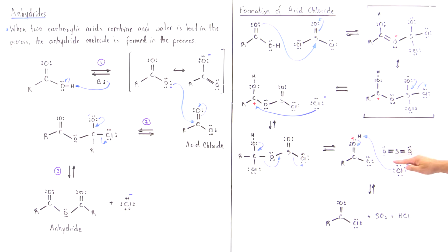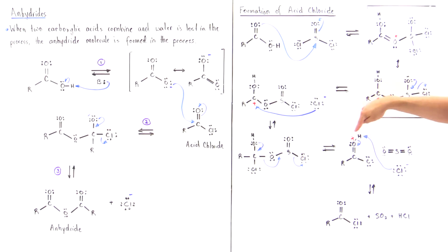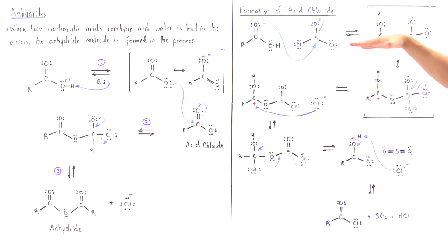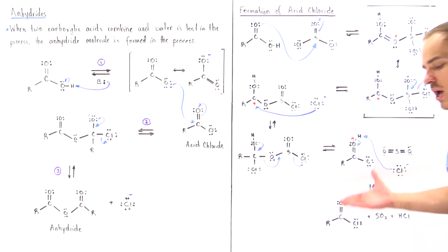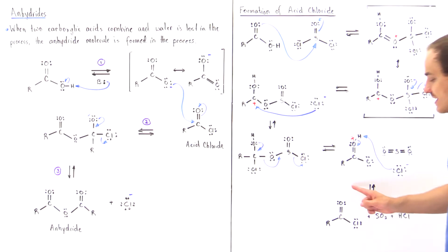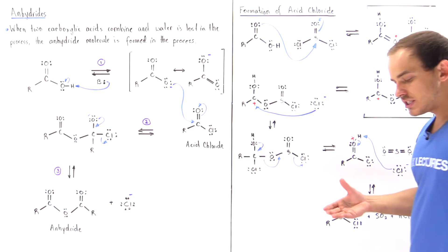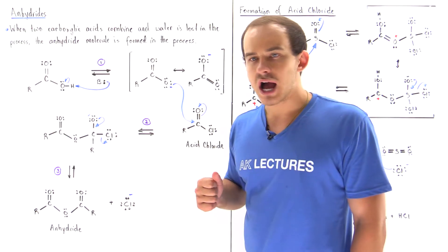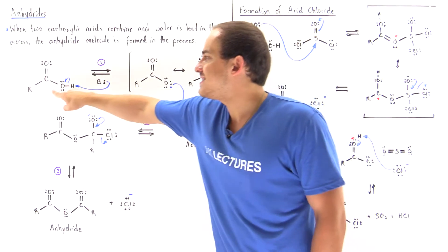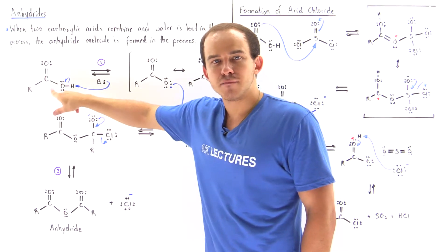In the final step, this Lewis base deprotonates the oxygen, taking off this H atom and forming the final product of this reaction: the acid chloride, as well as HCl and SO₂. Now that we have formed the acid chloride, we can use it to form our anhydride from a second carboxylic acid molecule.